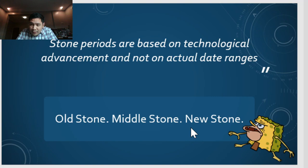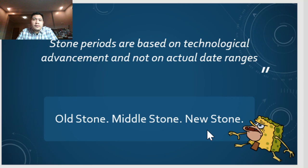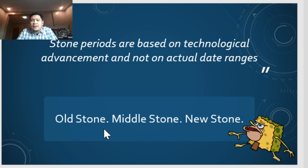To recap: Old Stone is Paleolithic — Paleo meaning ancient or old. Middle Stone is Mesolithic — Meso meaning middle. New Stone is Neolithic — Neo meaning new or bago. Don't worry about Bronze and Iron Age as they have no further subdivisions. These three divisions are all under the Stone Age.